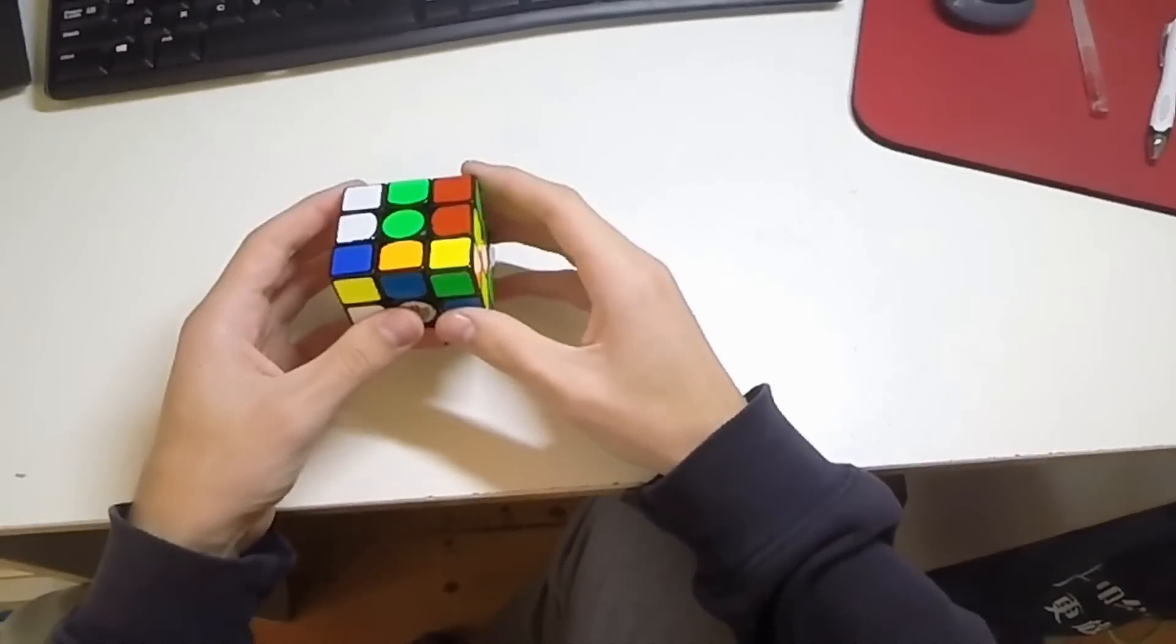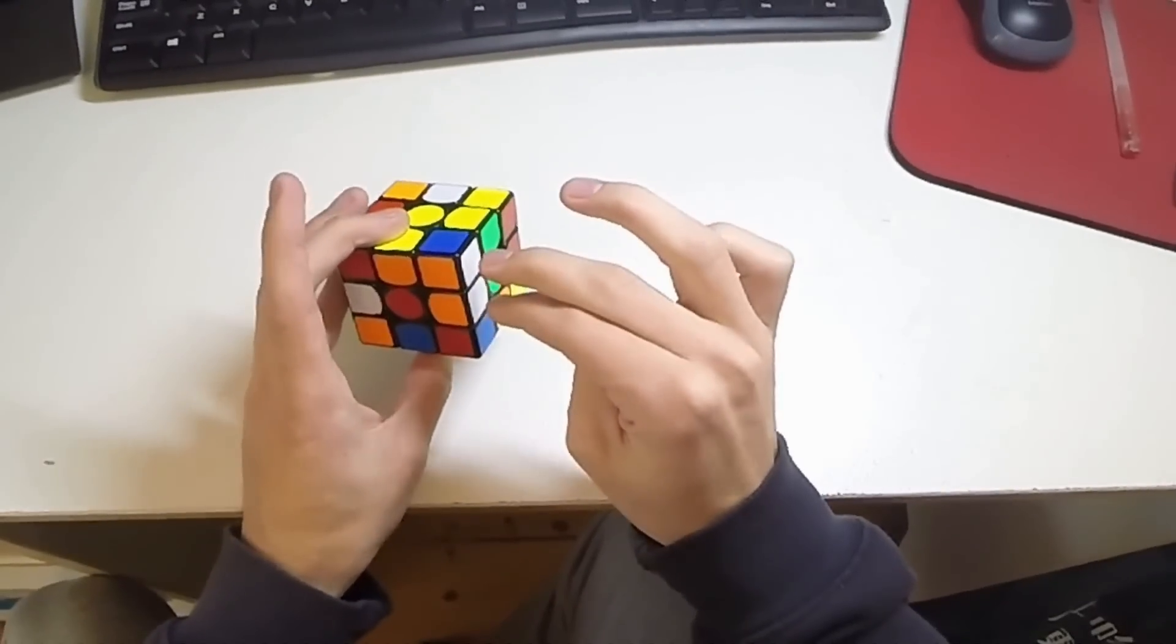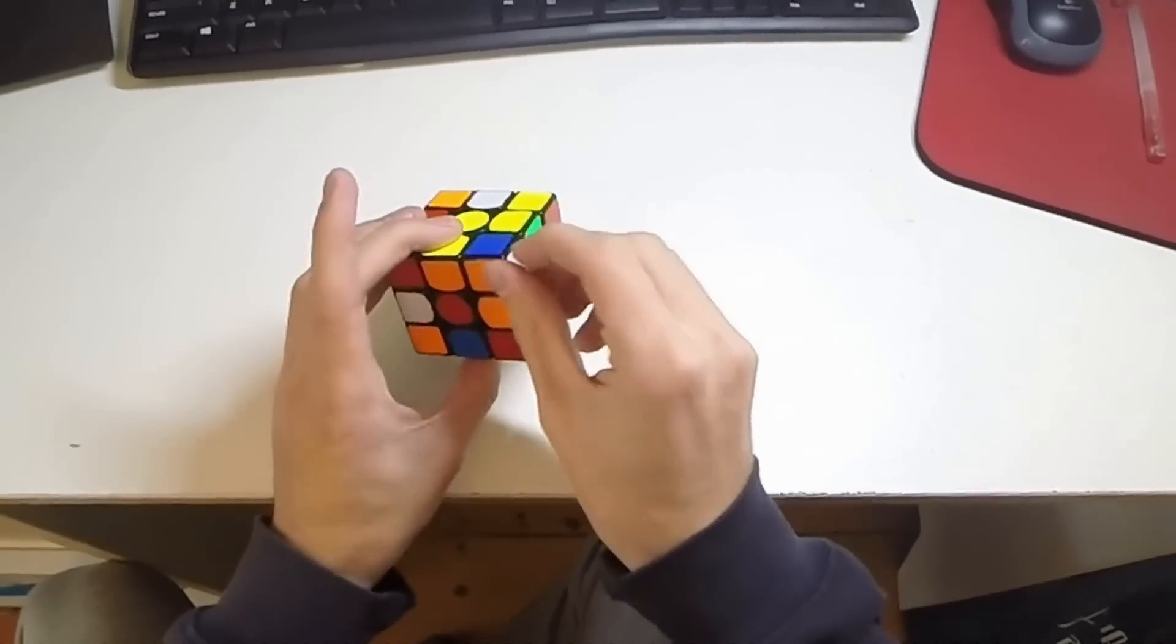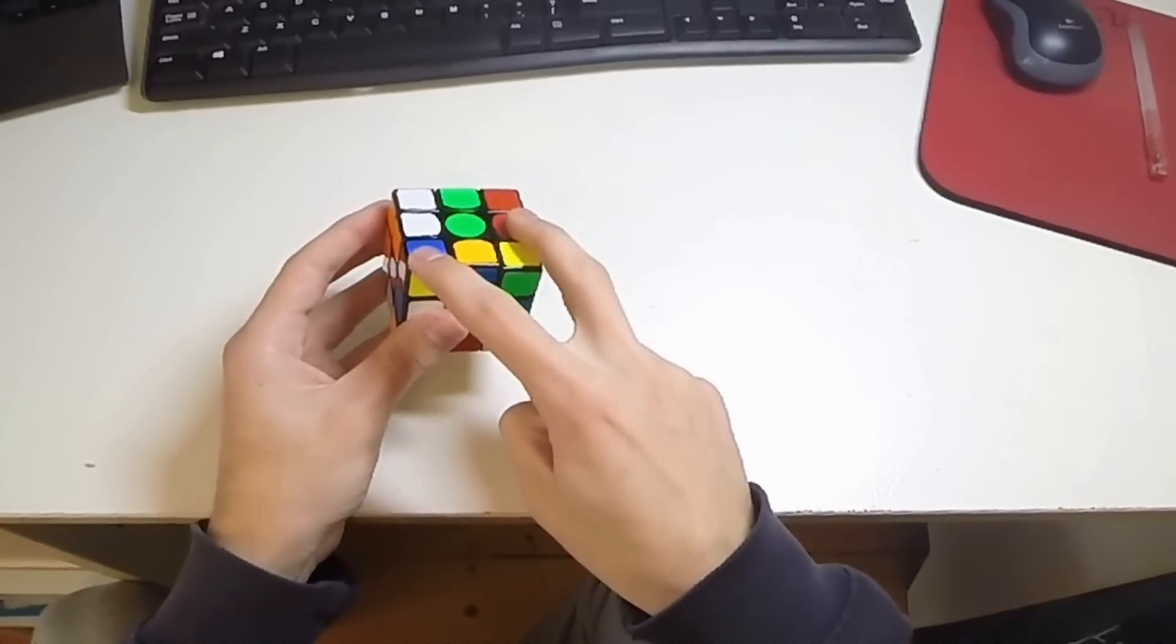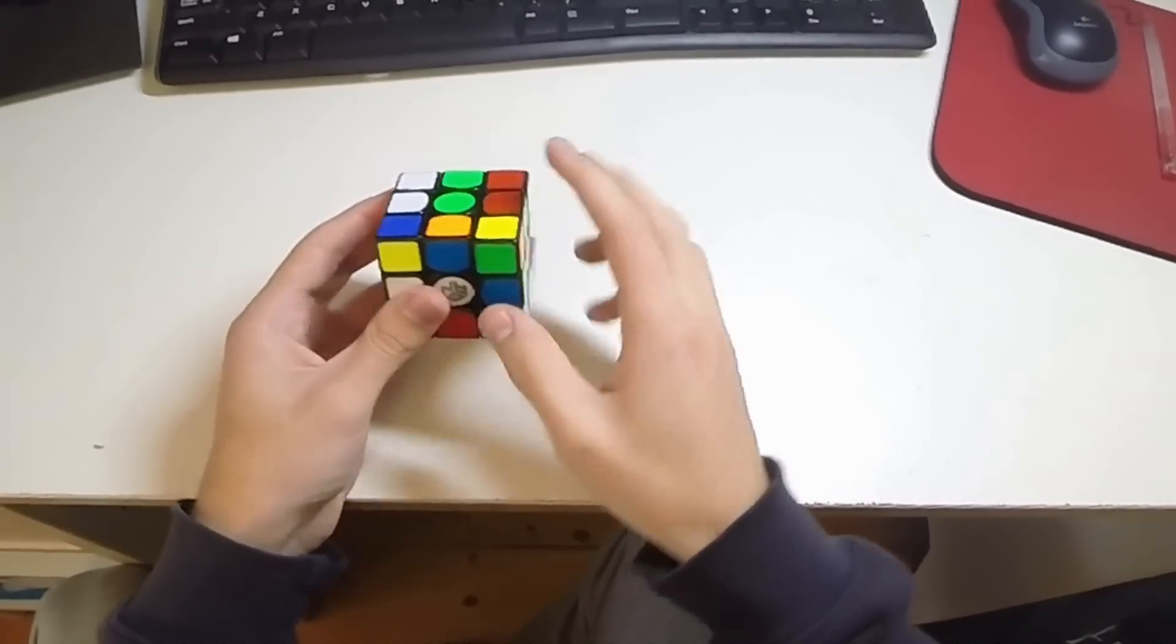But I actually managed to do a double X cross, noting that this pair is obviously formed together in the back there, and then we also have this corner and edge pair here.